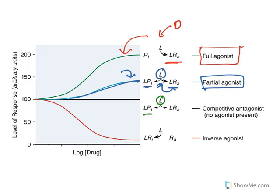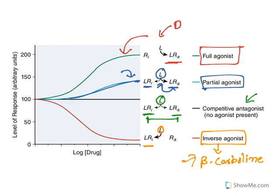Some ligands maintain an equilibrium between inactive and active conformation — equally distributed — so there is no response; these are known as antagonists. Antagonists bind with the receptor but produce no response because the receptor is in an equilibrium state. Some other drugs completely turn receptors into an inactive state — these are known as inverse agonists. An example is beta-carbolines at benzodiazepine receptors. For inverse agonists the curve goes completely downward, whereas for antagonists the curve is flat with no response.